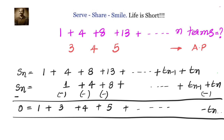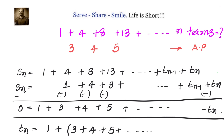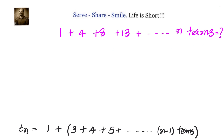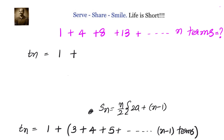Bringing tn to the left side, the nth term is given by 1 plus the sum of terms in AP: 3 plus 4 plus 5, and so on. How many terms are there? There are n minus 1 terms, because one term is not included. Let us use the sum of n terms of an arithmetic progression formula, which is Sn equals n over 2 times (2a plus (n minus 1) times d).